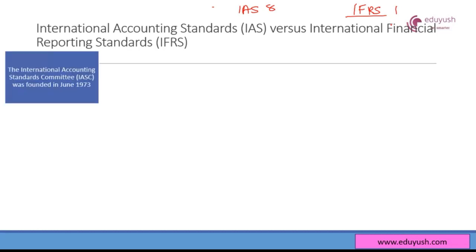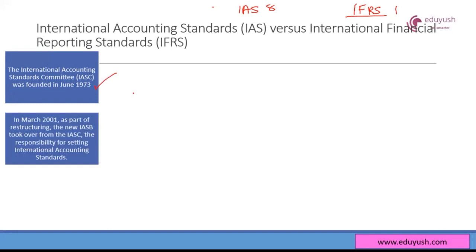To understand that, let's look at the history of how international accounting standards came to be set. In June 1973, the International Accounting Standards Committee was founded. And in March 2001, this committee was restructured and the new IASB — the International Accounting Standards Board — took over from the IASC, with the responsibility for setting international accounting standards.